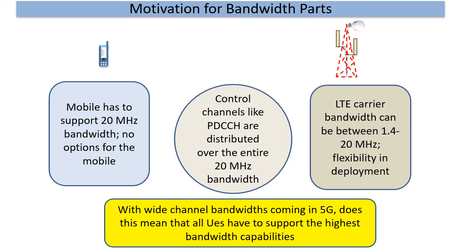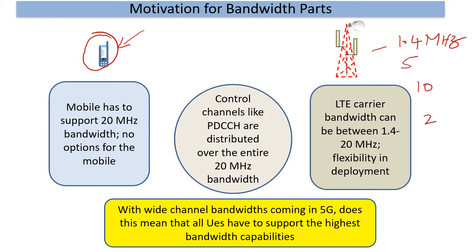Looking at one of the motivations for bandwidth parts, one of the challenges in LTE was that all LTE handsets had to support 20 megahertz bandwidth. Ironically, the base station and the deployment, because of various reasons, could go as low as 1.4 megahertz of bandwidth. But all UEs had to support 20 megahertz, and in different deployments you could have bandwidth ranging from 1.4, sometimes 5, sometimes 10, sometimes 20.